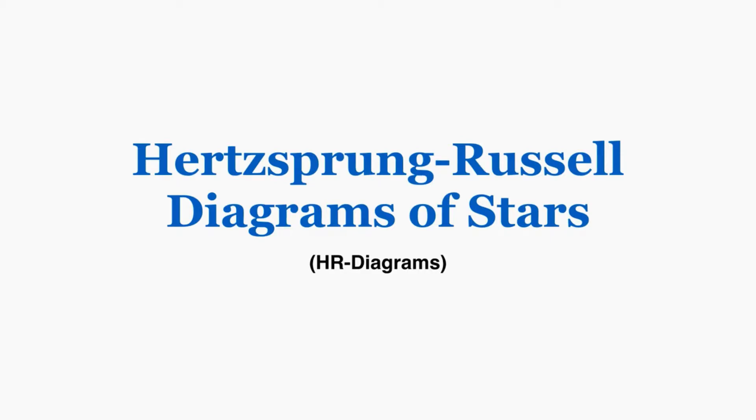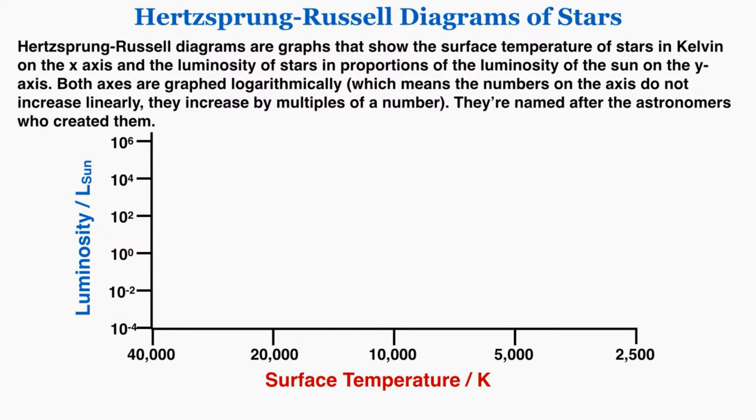This lecture is about Hertzsprung-Russell diagrams of stars, which we usually just call HR diagrams. They're named after the astronomers who created them. HR diagrams are graphs that show the surface temperature of stars in Kelvin on the x-axis and the luminosity of stars measured in proportions of the luminosity of the sun on the y-axis.